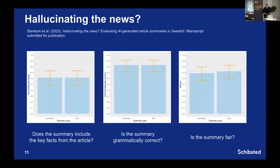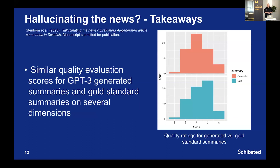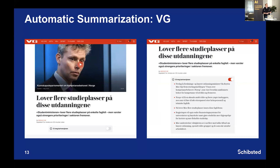We evaluated on several dimensions: does the summary include the key facts from the article, is it grammatically correct, is it fair? In all of those dimensions, it seems there isn't a big difference between how journalists evaluate the AI-generated summaries and how they evaluate journalist-written summaries when they don't know which is which. The quality ratings given by journalists to both types of summaries are very similar, which encourages us to consider whether this can be used in practice.